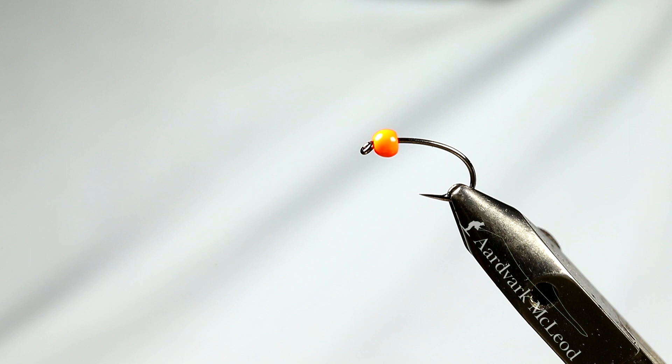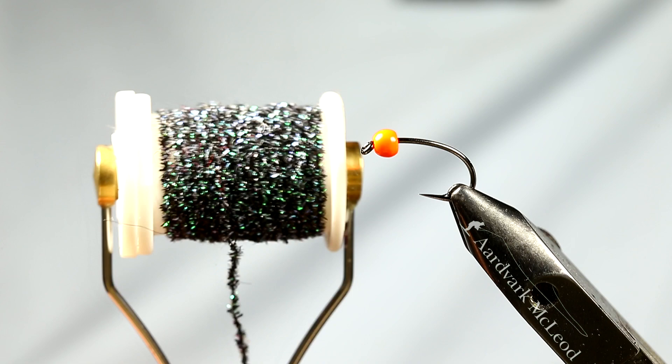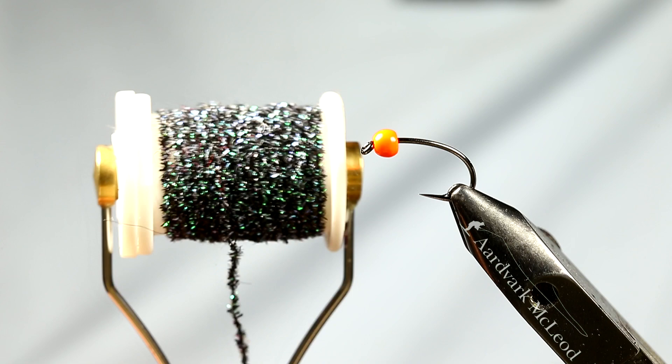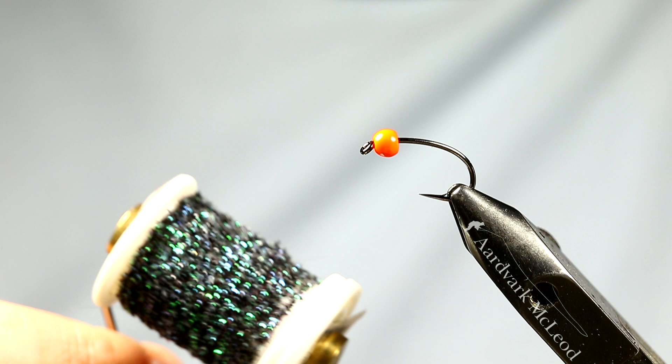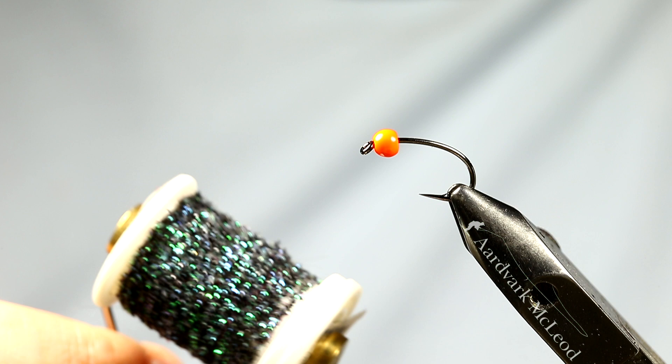So the body is micro cactus chenille. So if you know fritz, this is basically like a really fine version of fritz and this is a black pearl version. It's really fine stuff. It's 0.8 millimeters in diameter. So really fine stuff. So this is the body, that's one material.